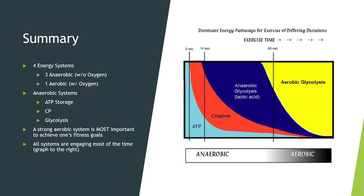All systems are engaging most of the time. Just because you push for five seconds all-out doesn't mean ATP storage is the only thing working. What's happening is you're gradually moving from one system to the next — you start utilizing ATP storage, then go into creatine phosphate, then glycolysis, then the Krebs cycle. Little by little, you transition into those other energy systems.